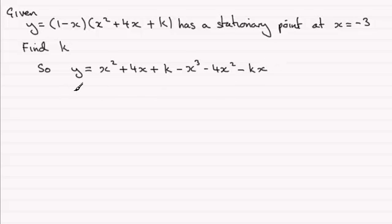If I group up some of my terms here, we'll start with the x³ term: -x³. We've got x² - 4x², so that's -3x². Then 4x - kx. And the constant k on the end: +k.